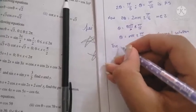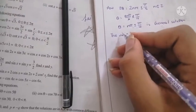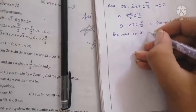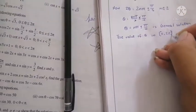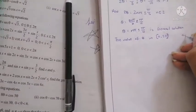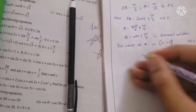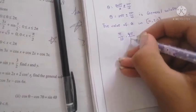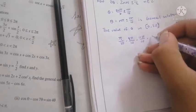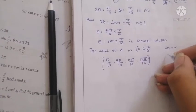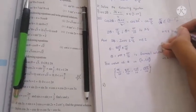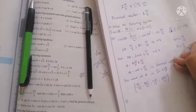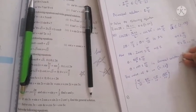The question asks to solve for θ in [0, 2π]. Substituting n=0 gives π/10; n=1 in nπ ± π/10 gives 11π/10 and 9π/10; n=2 gives 21π/10 and 19π/10. Since 21π/10 > 2π, the valid values are π/10, 9π/10, 11π/10, and 19π/10.